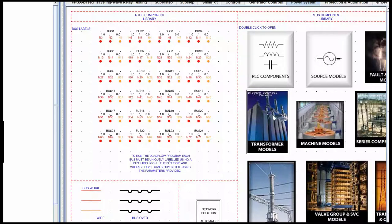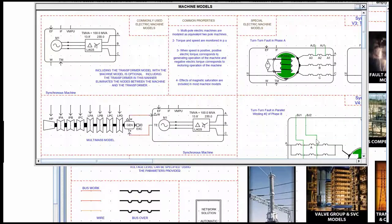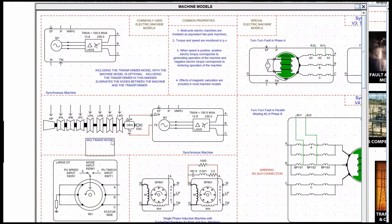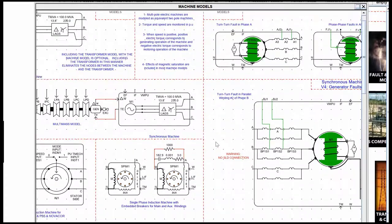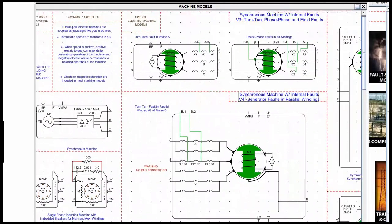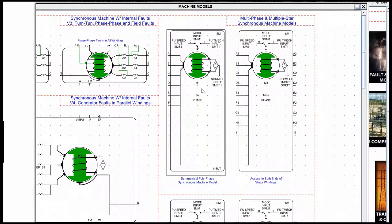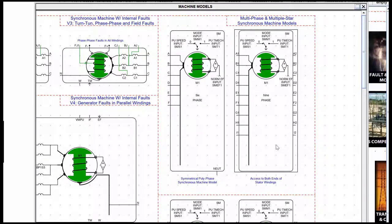This part of the presentation is focused on demonstrating a typical electric ship simulation. Before that, I would like to show you the library of electric machine models. I'm showing this using RSCAD V5. We have the synchronous machine and faulted synchronous machine model. Today's focus is on polyphase — symmetrical polyphase and multi-star machines.